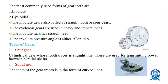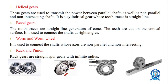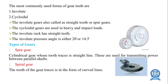Next topic is types of gears. Normal types of gears are spur gear, spiral gear, bevel gear, helical gear, worm and worm wheel, and rack and pinion gears. Spur gears are cylindrical gears with tooth traces straight and parallel to the axis of the wheel, used for transmitting power between parallel shafts.